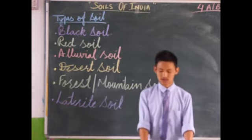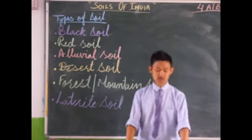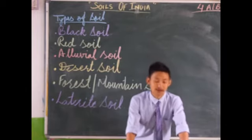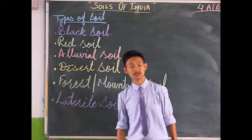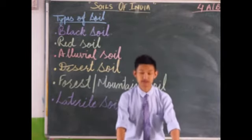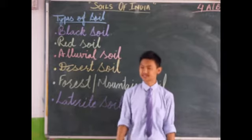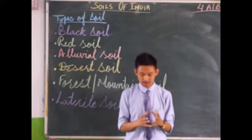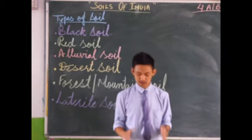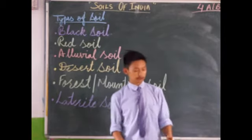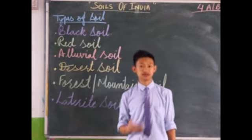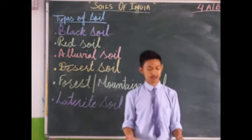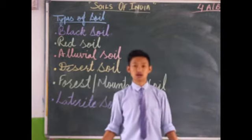Igneous rocks are formed by the solidification of molten material, and metamorphic rocks are formed by the action of heat and pressure — we will discuss those in the next chapter. Red soil is mostly formed in areas with relatively less rainfall, so it is not very suitable for growing crops. However, farmers add manure and grow a few crops like groundnut, bajra, and jowar.